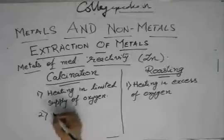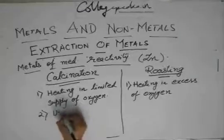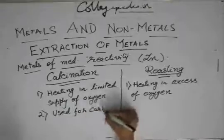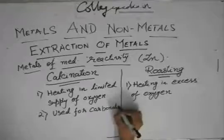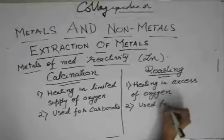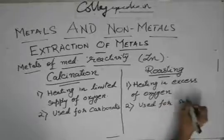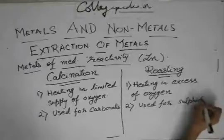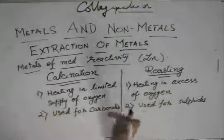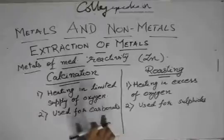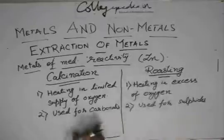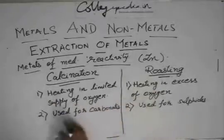Secondly, calcination is used for carbonates, while roasting is used for sulphides. We saw that metals of medium reactivity can be grouped into carbonates and sulphides. For carbonates, this method is used. For sulphides, this method is used.